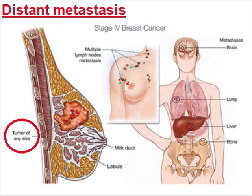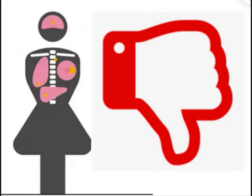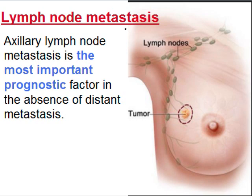Distant metastasis — tumor of any size, if presented with distant metastasis, is a bad prognostic sign. Presence of metastatic disease in the brain, lungs, kidney, and liver is significant. Lymph node metastasis is also a bad prognostic factor. Axillary lymph node metastasis is the most important prognostic factor in the absence of distant metastasis.